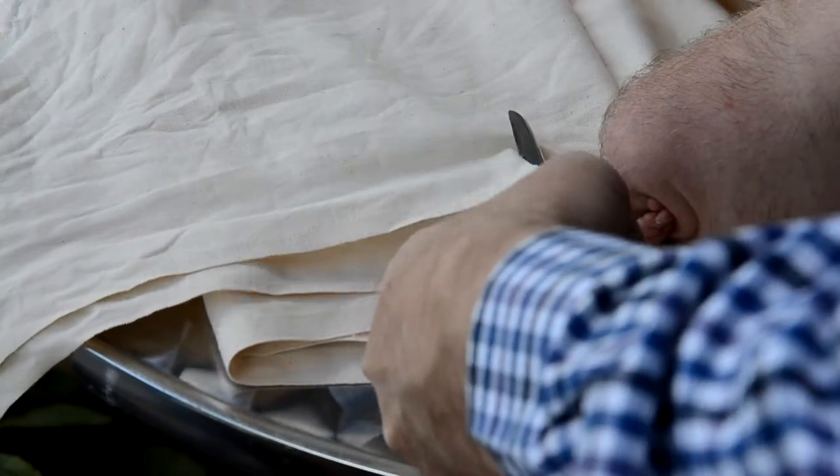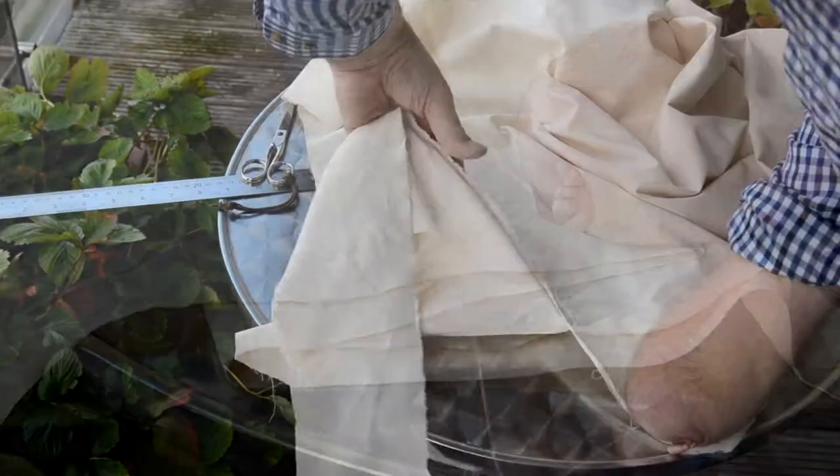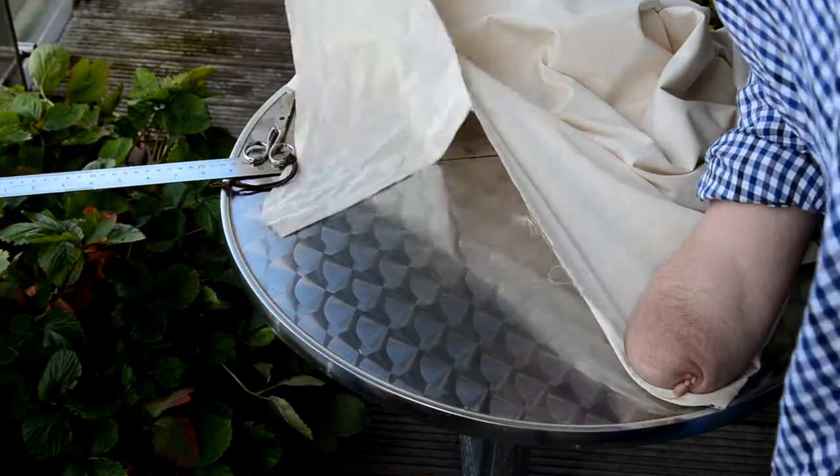All you need is 1 meter of calico and 8 cable ties. Once you've cut the fabric and folded it on itself, you are ready to make the bag.